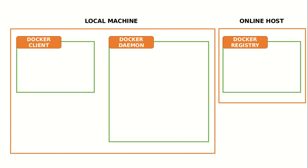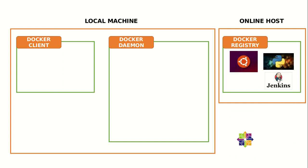You can also make use of other online registries, but for our tutorial we will be using Docker Hub. This Docker registry consists of all the images that you can use to run your containers. For example, you can have the Ubuntu image, the Python image, the Jenkins image, the CentOS image, the Java image — you'll have lots of images available in Docker Hub. All these are public images, so anybody can use them.